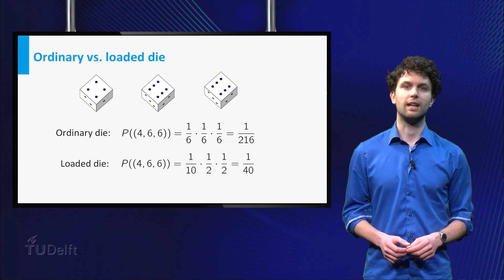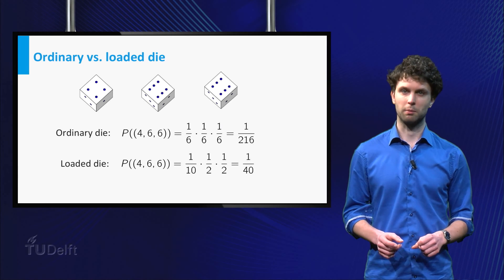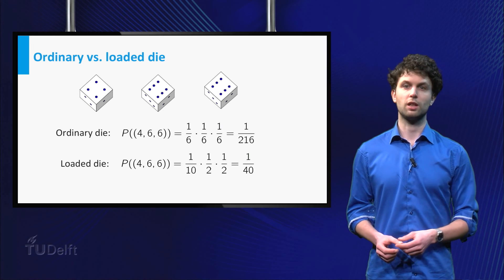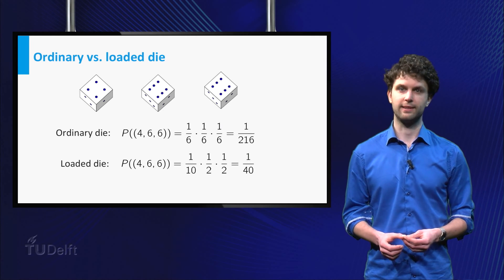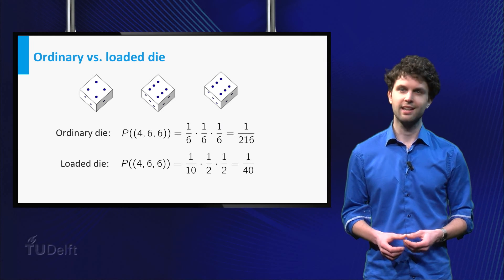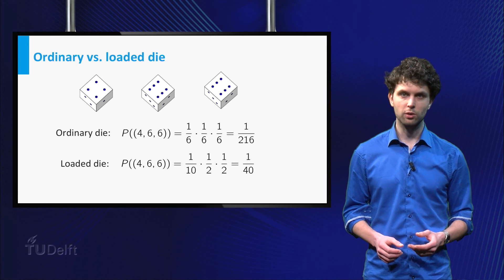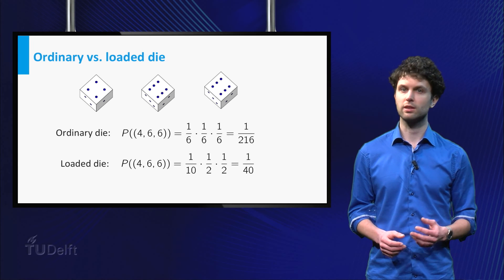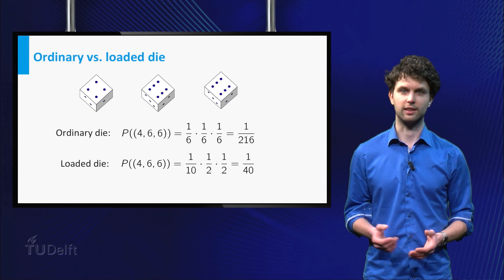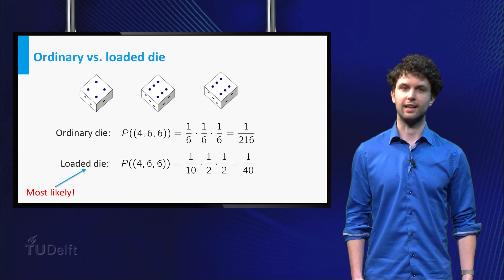Alternatively, if you throw with a loaded die, this probability becomes one over forty. So with a loaded die, the probability of seeing a four and two sixes is much higher. In other words, it is more probable to throw 466 with a loaded die than with a standard die. And we say it is most likely that a loaded die was thrown.